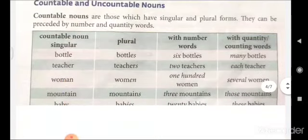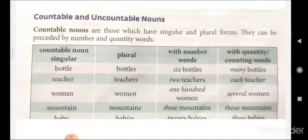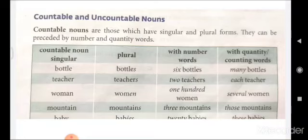The next type is countable and uncountable nouns. Countable nouns are those which have singular and plural forms and can be preceded by number or quantity words. For example, 'bottle' is the singular countable noun, whereas 'bottles' is the plural form, which can be expressed with number words — such as 'six bottles' — or with quantity words — such as 'many bottles'. So things which we can count and which have a plural form are considered countable nouns.